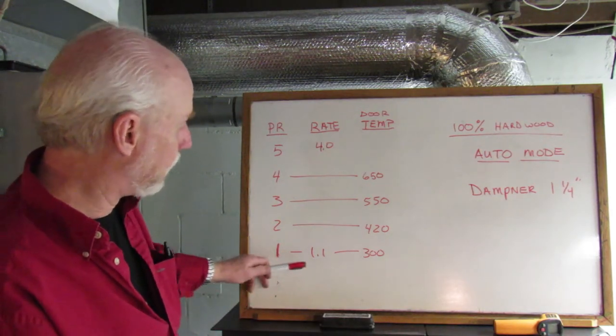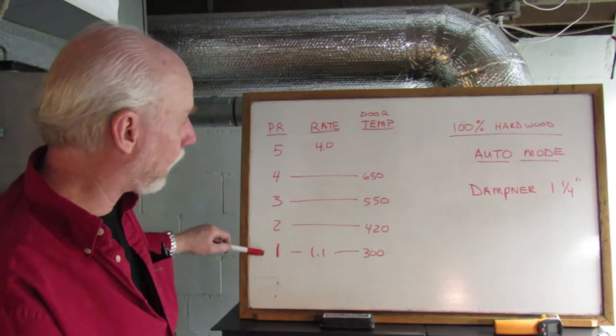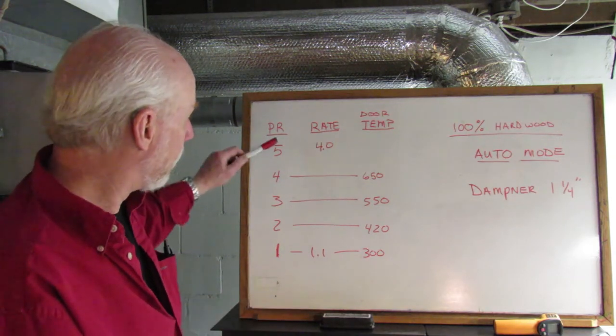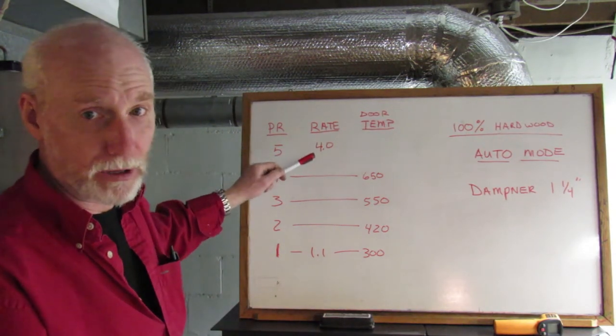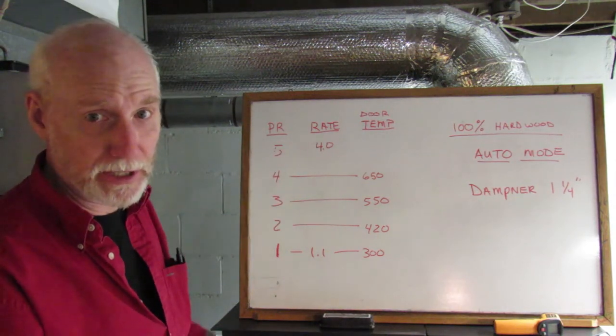But if you set your stove up to run 1 through 4, it's going to run much smoother, much more reliable. Don't use 5 at all. That's your buffer zone on that top end is setting number 5.